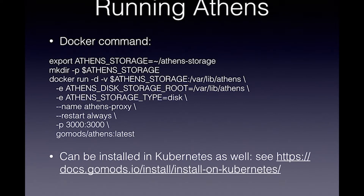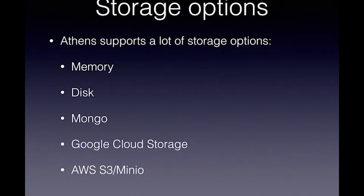This is the actual script I use to install Athens — it's basically just a Docker container. You give some environment variables on how you use it, whether you store it on disk or not. It can run in Kubernetes. Storage option-wise, it has a pretty decent setup: you can do it in memory, on disk, and then use S3 or Google Cloud Storage.